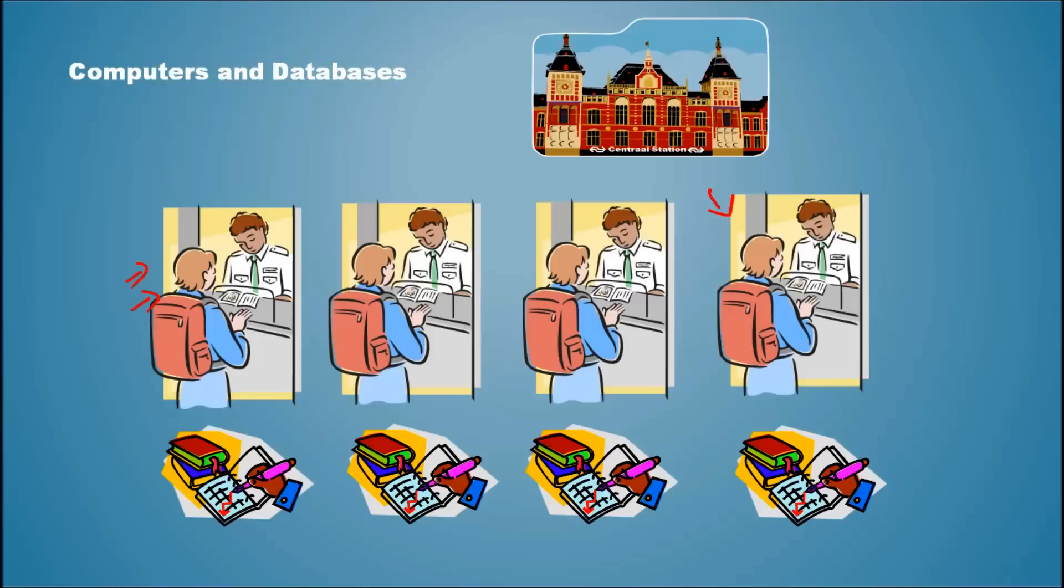If there was instant communication between all these ticketing officers, then the customer at the fourth booth would have been given the ticket which was just cancelled.